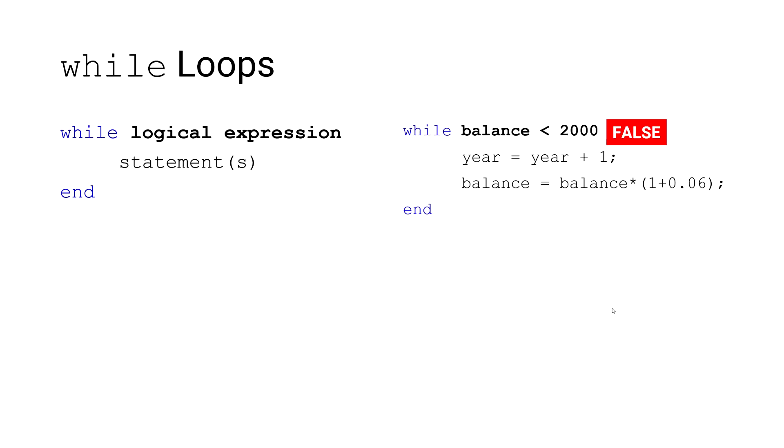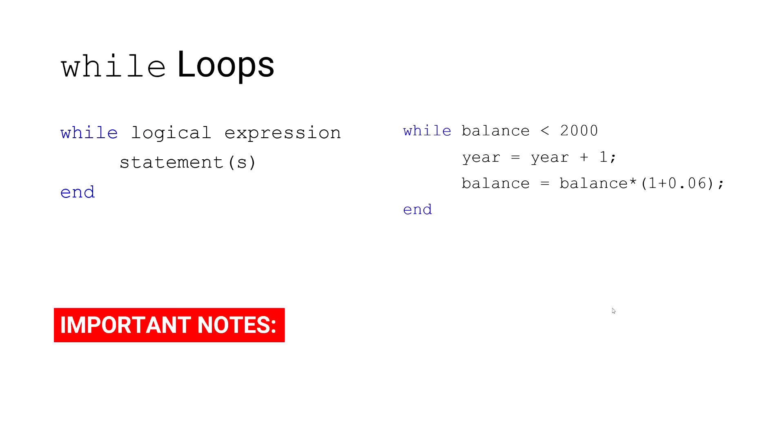And when this logical expression is false, which means when the balance meets or exceeds a value of $2,000, the while loop will end and the program will proceed with any additional lines of code after the end statement.